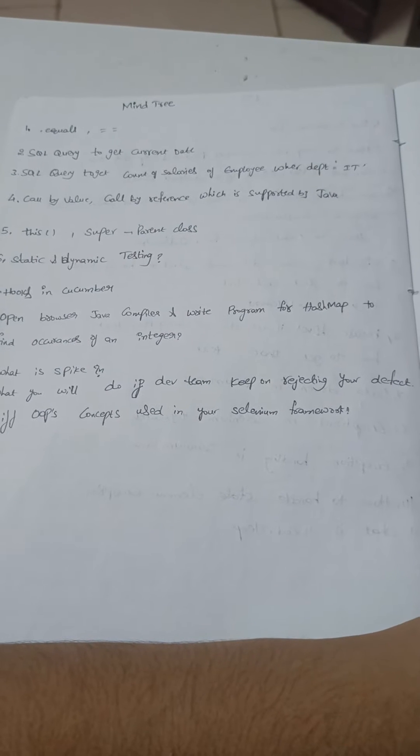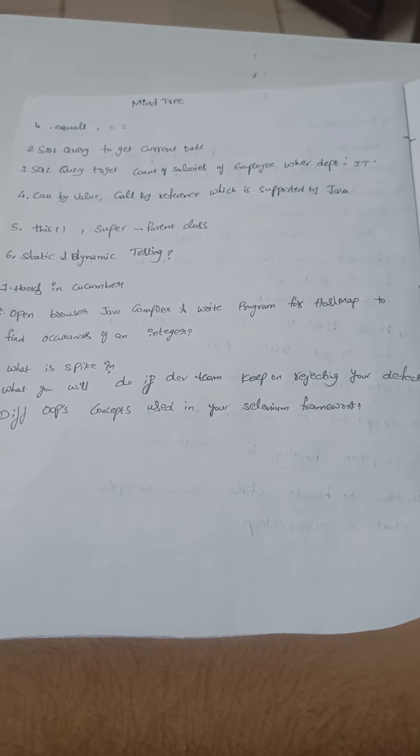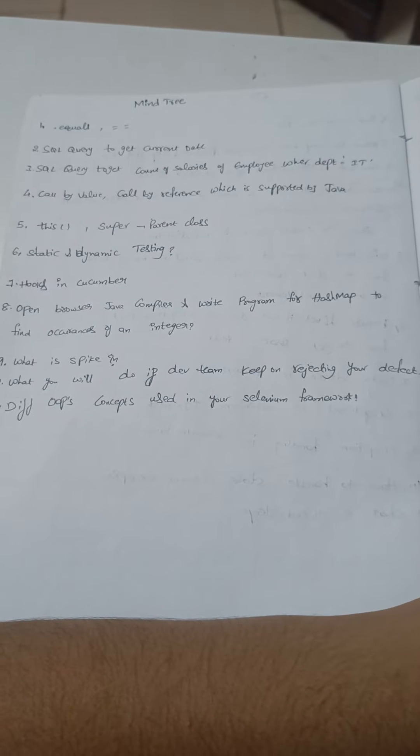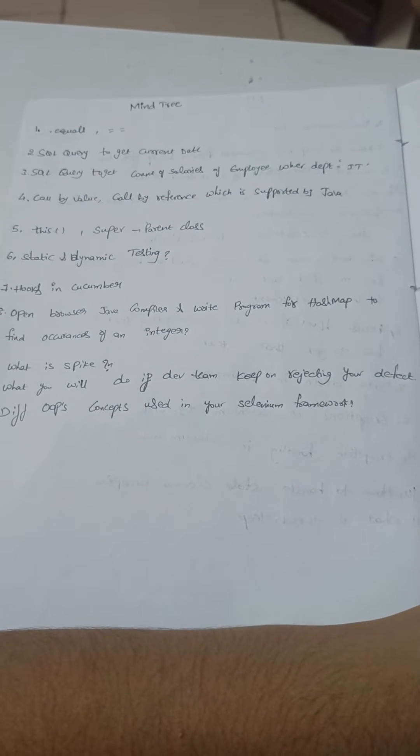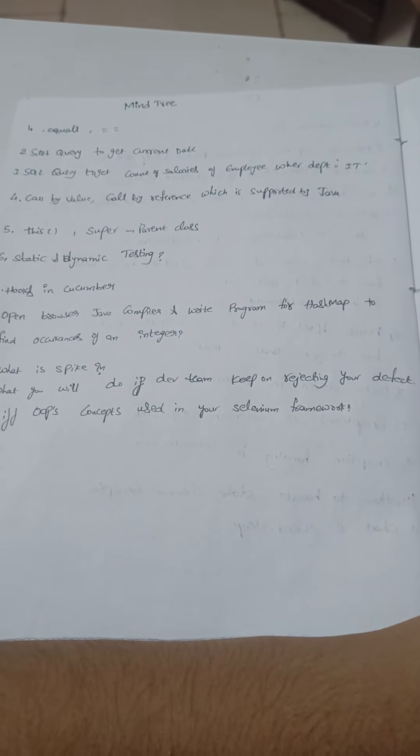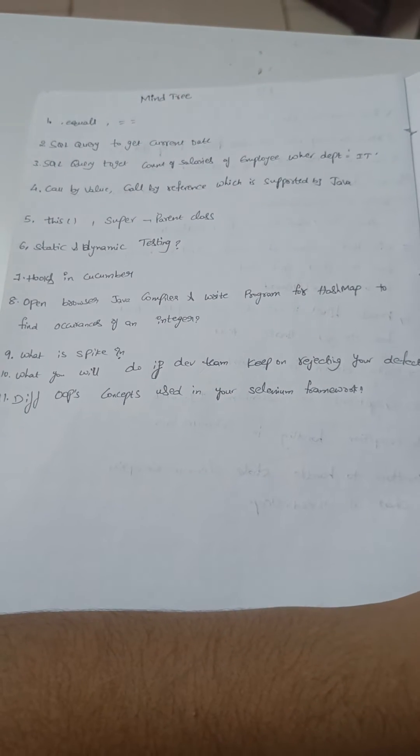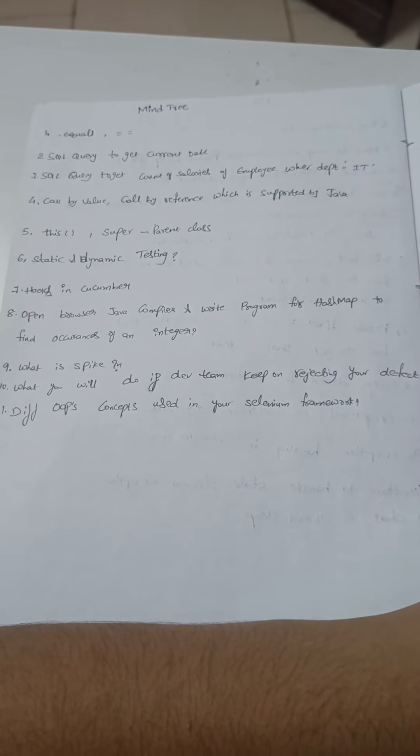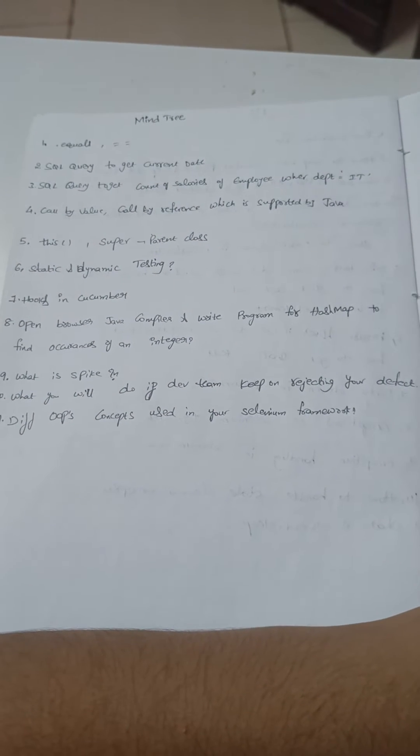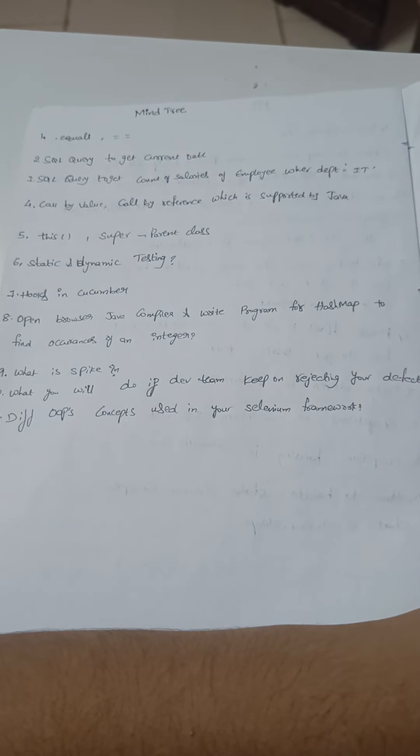Fourth one is call by value and call by reference - which is supported by Java. Fifth one is this and super keywords in Java. We have to explain about this keyword and super keyword.